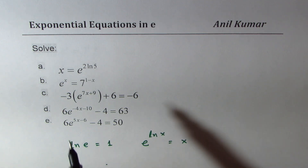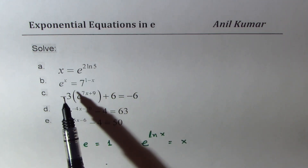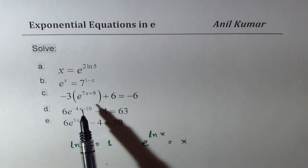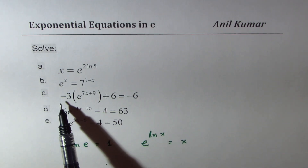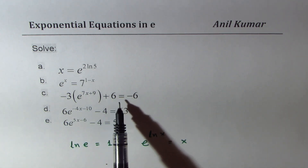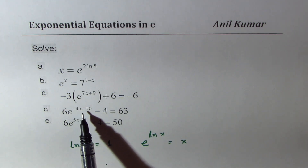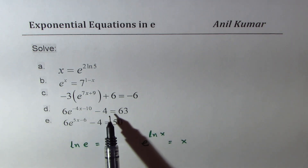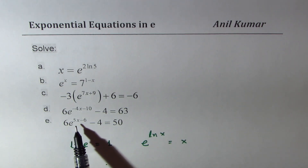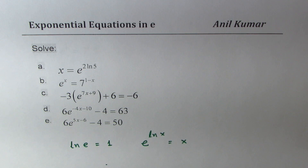The equations for us are: x equals e to the power of 2·ln(5); e to the power of x equals 7 to the power of 1 minus x; minus 3 times e to the power of 7x plus 9 plus 6 equals minus 6; 6 times e to the power of minus 4x minus 10 minus 4 equals 63; and 6 times e to the power of 5x minus 6 minus 4 equals 50.